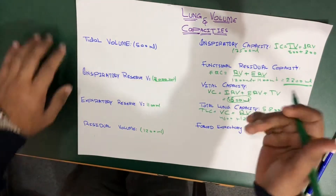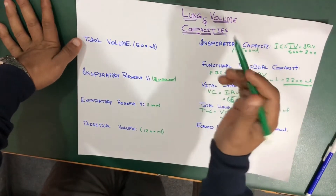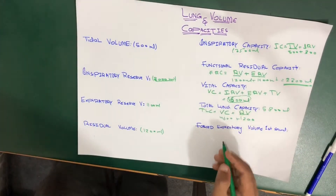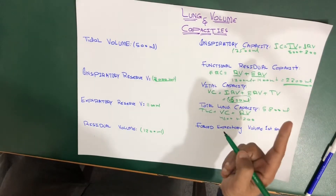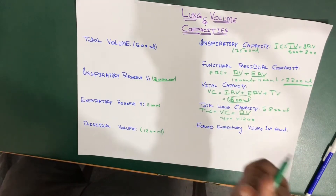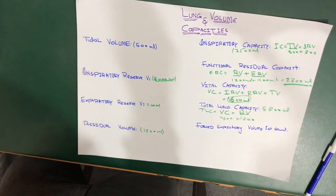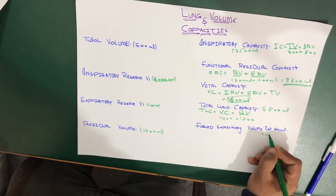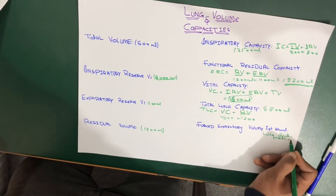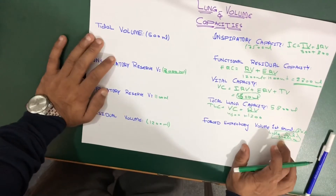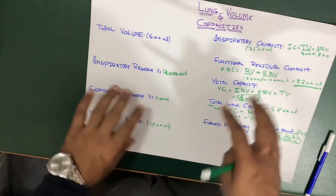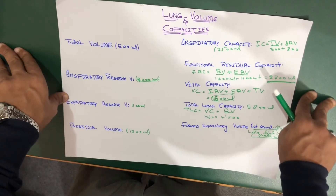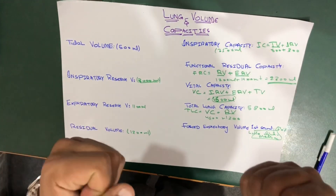We can measure tidal volume and most of these values using spirometry. However, we cannot measure forced expiratory volume or functional residual capacity using spirometry alone — for those we use the helium dilution method. That covers lung capacities and volumes. For any other lectures, please visit our website at www.tigesschooling.com, leave a comment, and let us know how we can help. Keep visiting Tides Schooling.